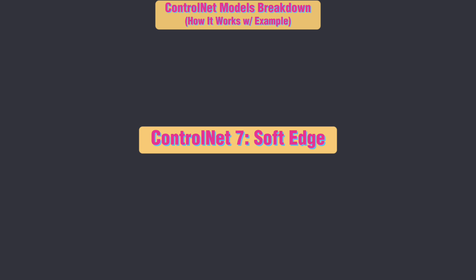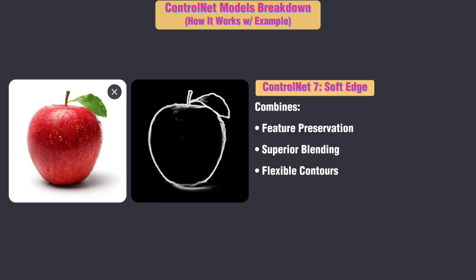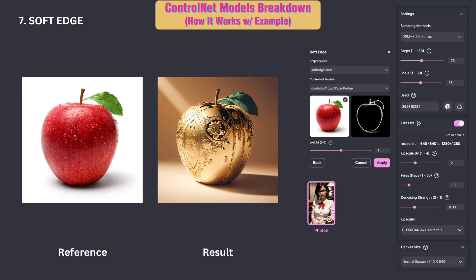ControlNet 7: Soft Edge. Soft Edge combines feature preservation, superior blending, and flexible contours, ensuring authenticity, harmonious compositions, and greater creative freedom for artists. Soft Edge lets artists add depth to digital art, refines images for a smooth blend, and helps graphic designers create eye-catching visuals for different projects.